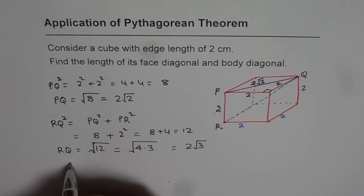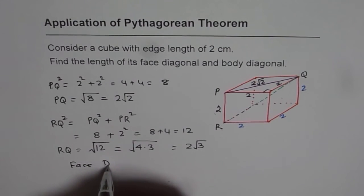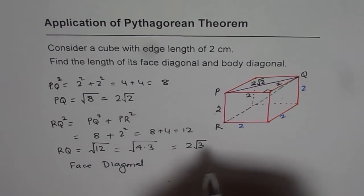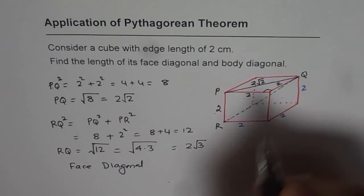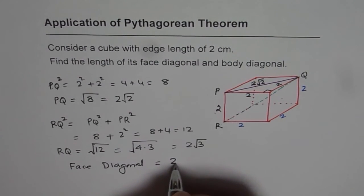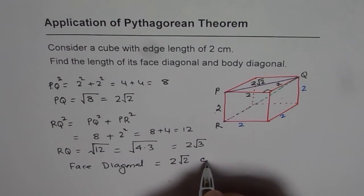So we get that the face diagonal, which is PQ for us, is equal to 2 square root of 2, and the units are centimeters.